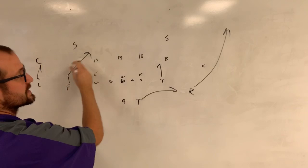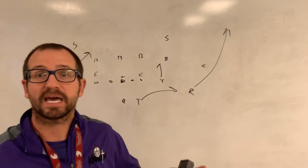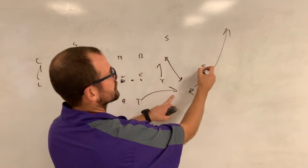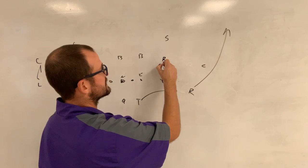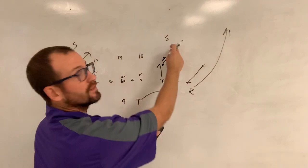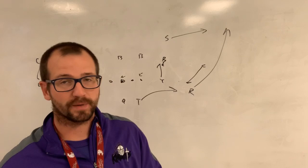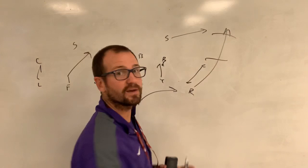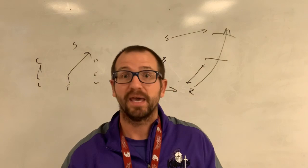Now let's say they don't adjust — let's say they press and take the backside away too. How do defenses take away the stick out of cover two? This is how: the backer sits on the stick, the corner takes the flat, and the safety takes the vertical. That's how they usually match up. Now, I know what you're saying coach — we can throw that seam shot between the corner and the safety, and if you've got a guy who can do that, great.